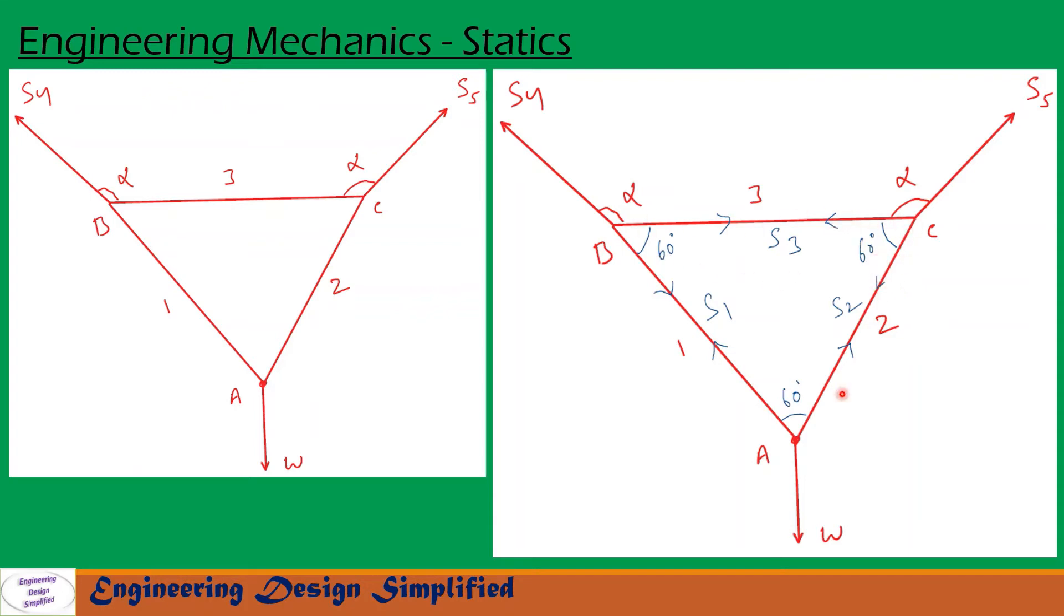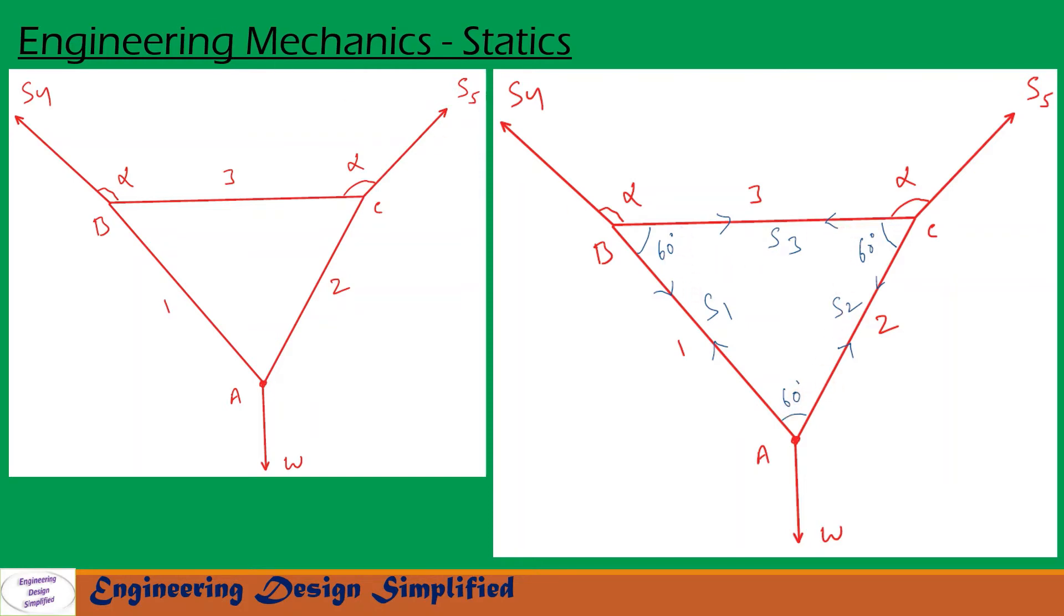So since this is an equilateral triangle, all the three angles are 60 degrees. Now let us move this weight and two reactions at point A to XY plane. So on this XY plane, we have weight W acting downwards. S1 is acting towards this direction. S2 is acting towards this direction. So since angle between S1 and S2 is 60 degrees, here also 60 degrees. Since this is 60 degrees, angle between S1 and W, similarly angle between S2 and W will become 150 degrees each, since it is symmetric.